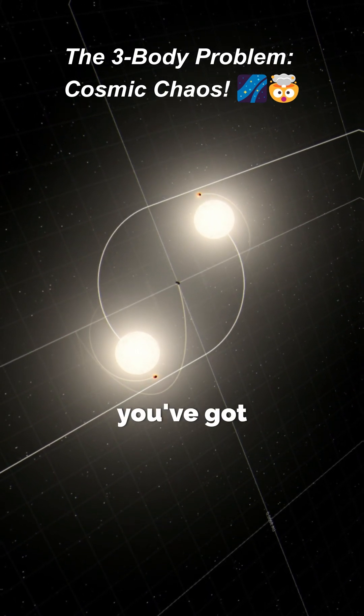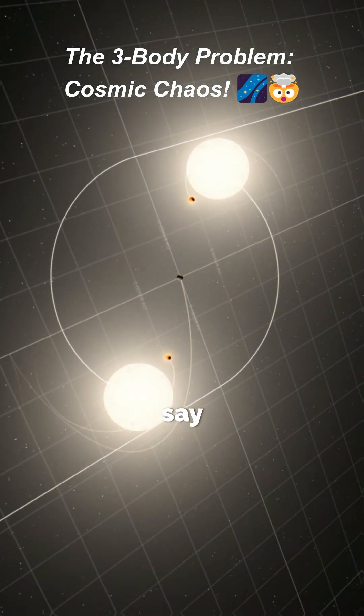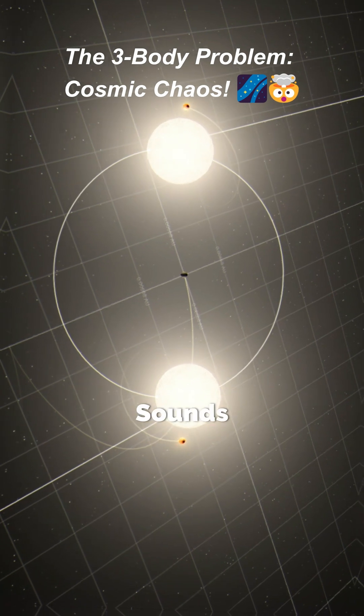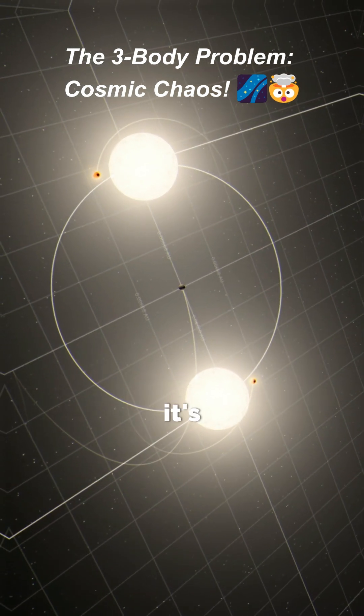Here's the deal. Imagine you've got three massive objects, say stars or planets, gravitationally interacting with each other. Sounds simple? Nope. It's chaos.